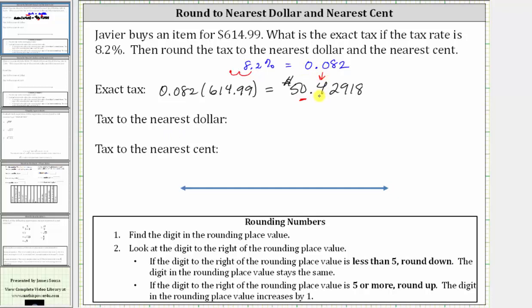If the digit is a four or less, we round down. If it's five or more, we round up. Because we have a four here, we round down to $50.